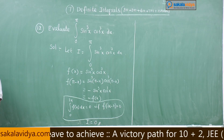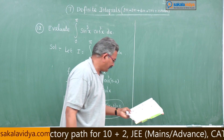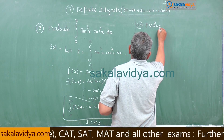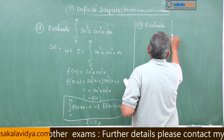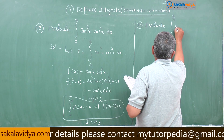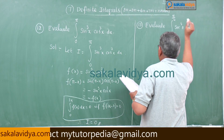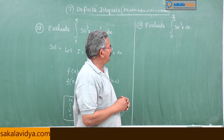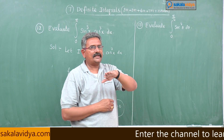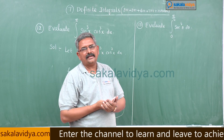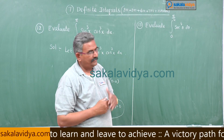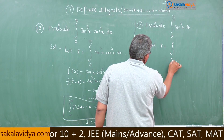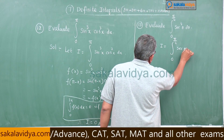Thirteenth problem: evaluate the integral from 0 to π/4 of sec⁴(θ) dθ. These types of problems involve reduction formulae, but since the power is small we can handle it directly by writing sec⁴(θ) as sec²(θ)·sec²(θ), then expressing one factor as (1 + tan²θ). It is simpler to substitute t = tanθ.